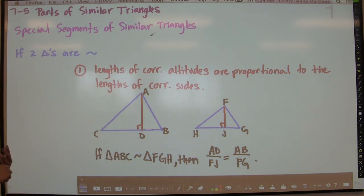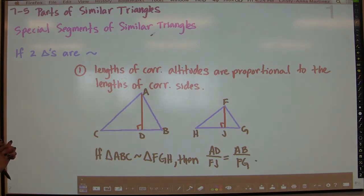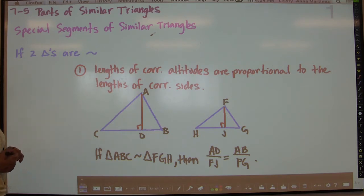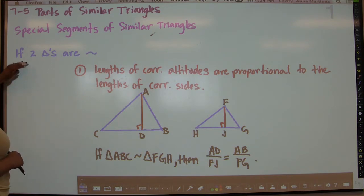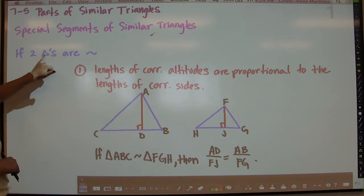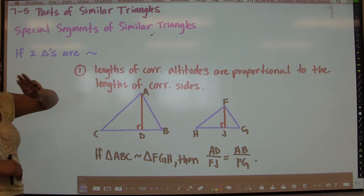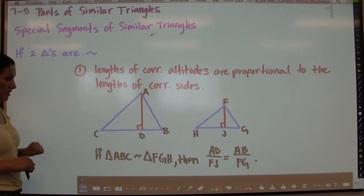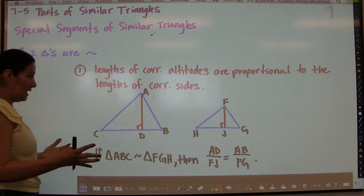We'll also be talking about medians and angle bisectors. The reason this is set up the way it is is because I didn't have enough space on the board to put all three theorems. But all three theorems start with the same hypothesis: if two triangles are similar. So that's what this says — if two triangles are similar, then three things happen. This is the first of those three things; the other two are on the next slide.